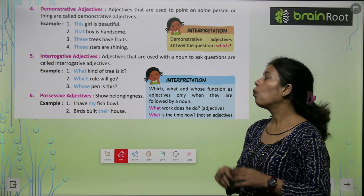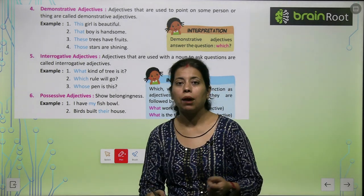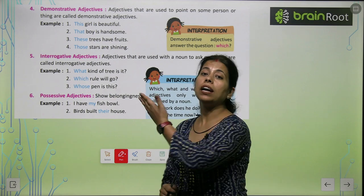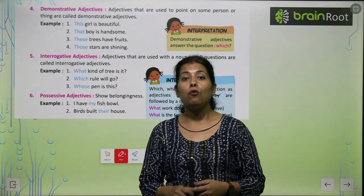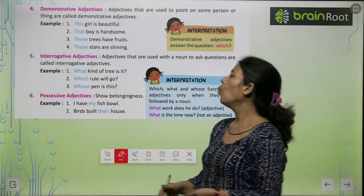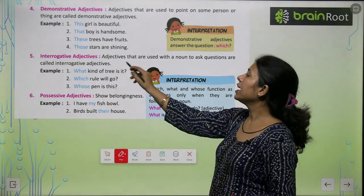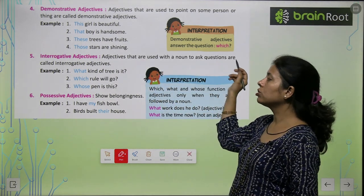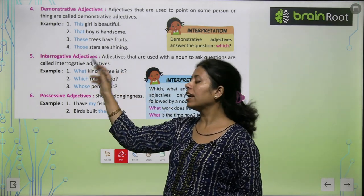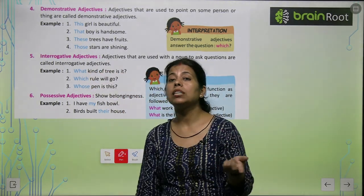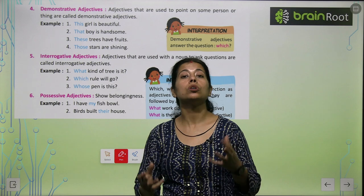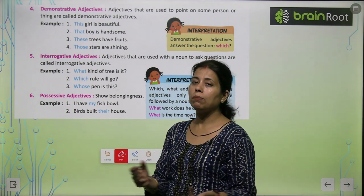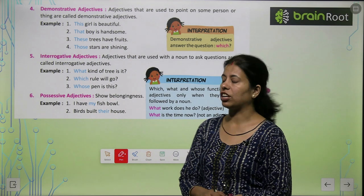Then interrogative — what, which, who, whose। हमने पढ़ा था interrogative sentences — same है interrogative adjectives। Adjectives that are used with the noun to ask questions are called interrogative adjectives। Noun के साथ जब हम whose, whom, which, what जोड़ देते हैं, तो यह क्या बन जाते हैं? Interrogative adjectives।